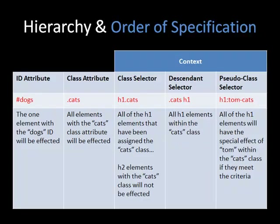Where it gets a little more confusing is when we have contextual classes within classes. Your book gets into this later on at the end when it covers more advanced CSS. Order of specification gets a little more confusing with these contextual classes. For example, if we just had a class selector, we'd affect all H1 elements assigned the cats class — but H2 elements with the cats class would not be selected. We can also have child selectors, or descendant selectors as your book calls them, where all H1 elements within the cats class would be selected.